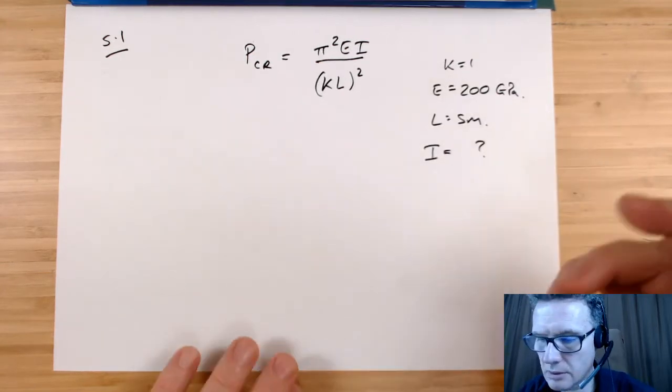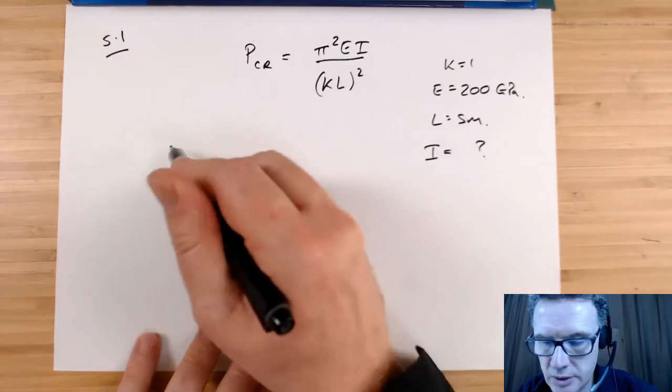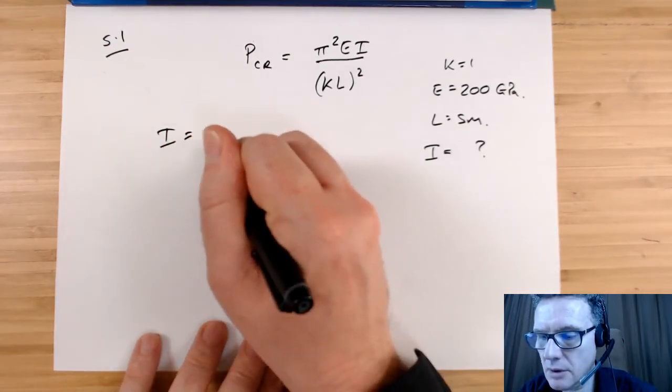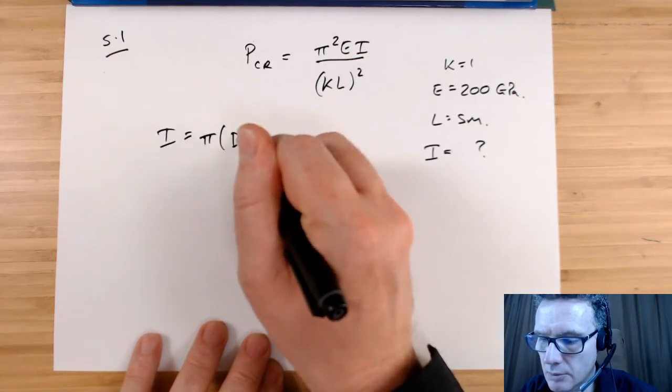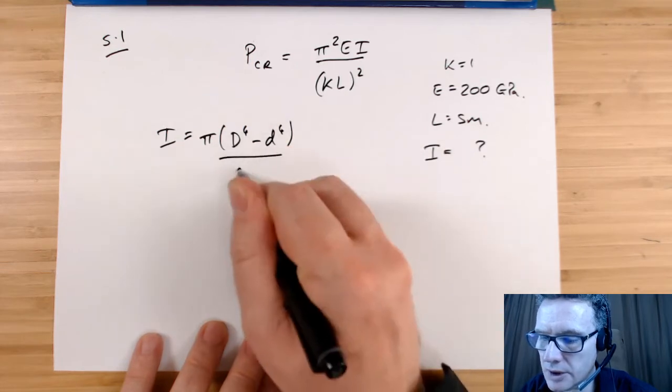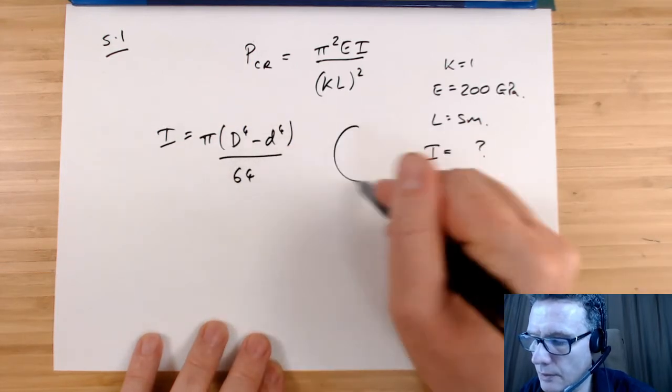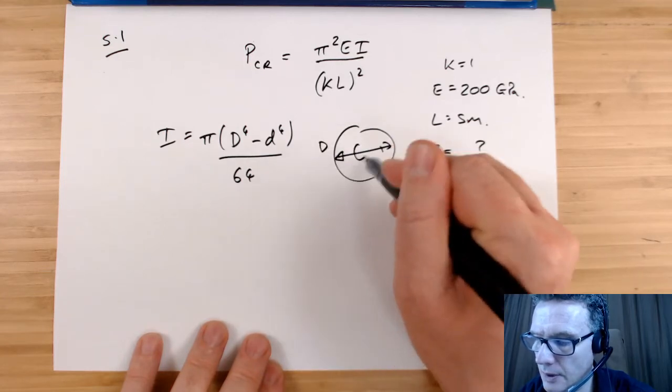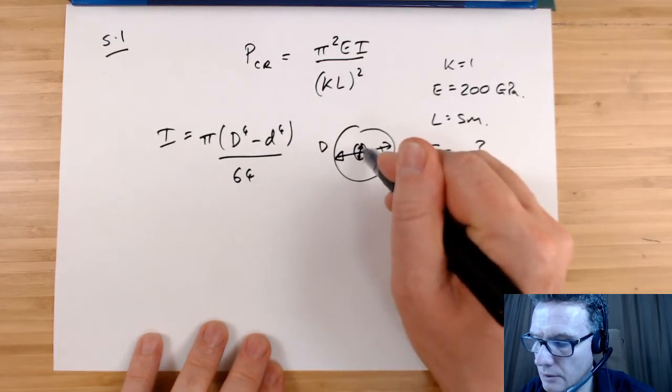So to find I, I'm going to use π(D⁴ - d⁴)/64. So that's big D and then we've got the inner little d.